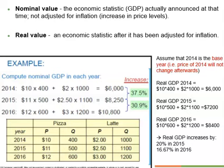We have the price and quantity of pizza and latte for 2014, 2015, and 2016 as shown on the screen. The nominal GDP for each year is calculated as the summation of the value of pizza and latte produced each year using the price and quantity levels of each year. The value of pizza equals the price of each pizza times the total number of pizzas made in a year. The value of latte equals the price of each latte times the total number of lattes made in a year.